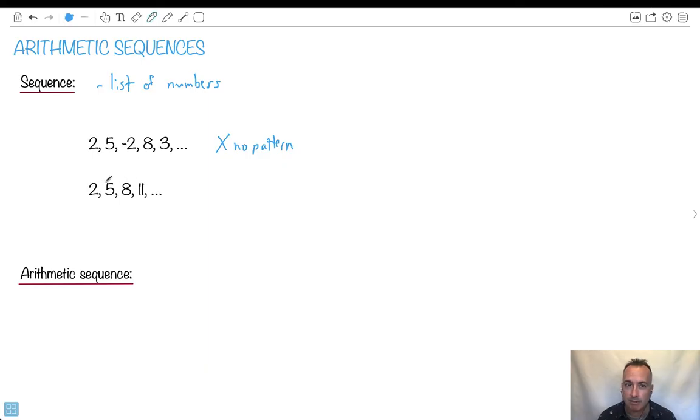Here there is a pattern. Can you see it? Between 2 and 5, you have to add 3. From 2 plus 3 gives you 5. 5 plus 3 gives you 8. 8 plus 3 gives you 11. If that's the case, can you guess the next number then?